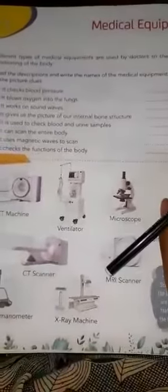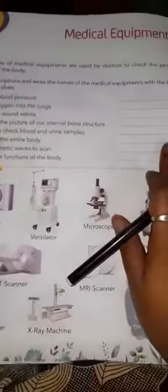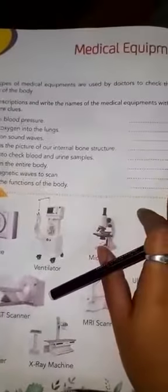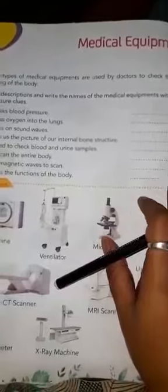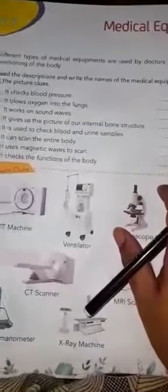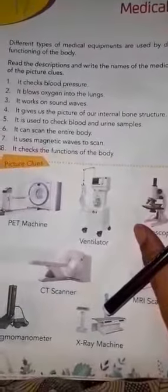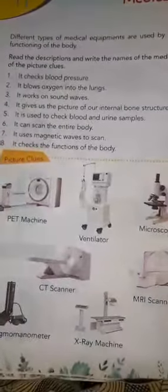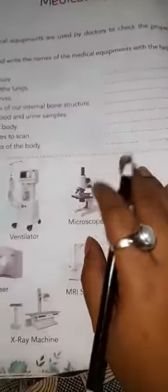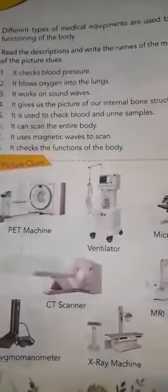Good morning students. Today we are going to do Chapter 17 in your textbook, which is about medical equipment. There are different medical instruments used by doctors to check the proper functioning of the human body. Some descriptions are given, along with pictures as clues, and you will have to fill in the names matching the descriptions.